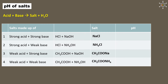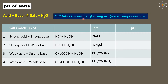A salt usually takes the nature of its strong acid or strong base component. For example, sodium chloride is made up of a strong acid and a strong base, so the pH of its solution is neutral — that is, 7.